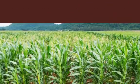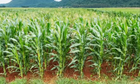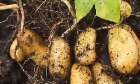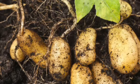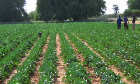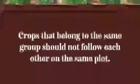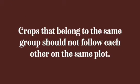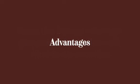Crops that consume a lot of nitrogen should be followed by those that add nitrogen to the soil. Nitrogen is an essential element, and crops such as cereals — maize, sorghum, and wheat — as well as tuber crops like potato, cassava, and yam, obtain nitrogen from the soil. These crops should be followed by cowpea, which is a leguminous crop that adds nitrogen to the soil. Additionally, crops that belong to the same group should not follow each other: tuber crops should not follow tuber crops, cereals should not follow cereals, and legumes should not follow legumes, as this prevents disease buildup.